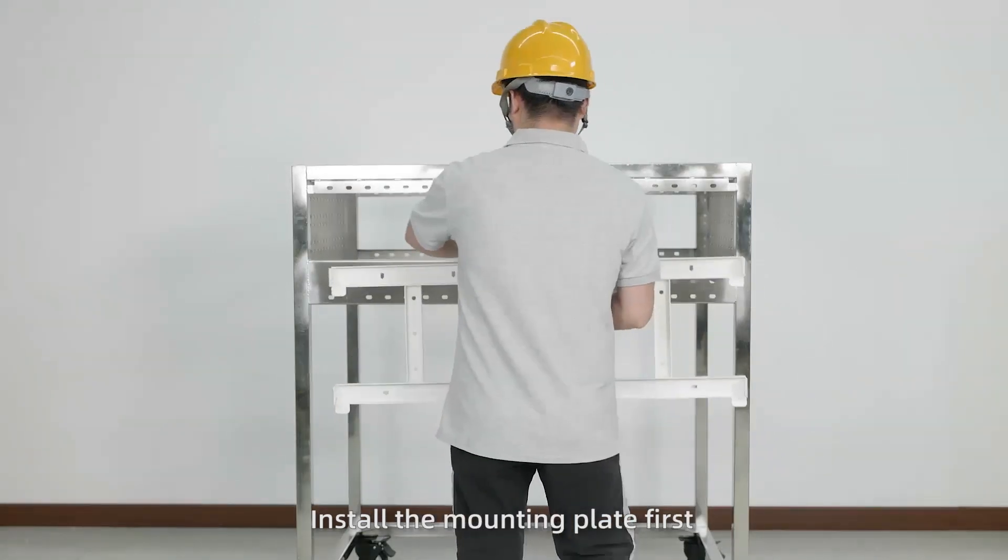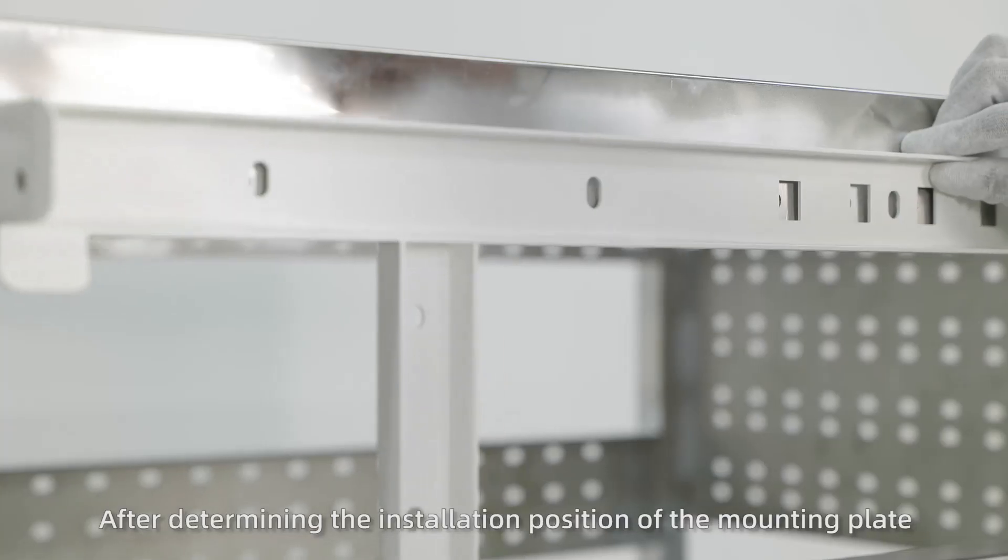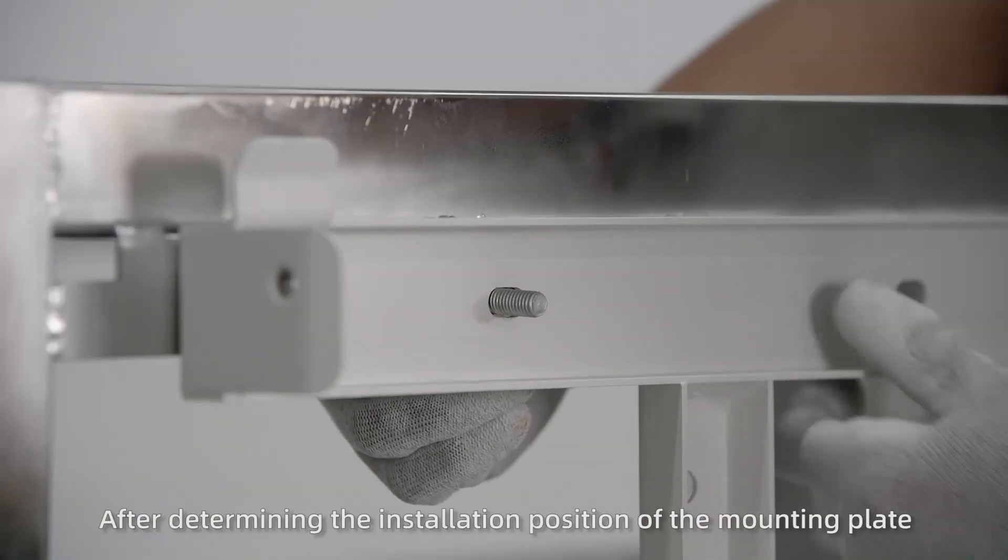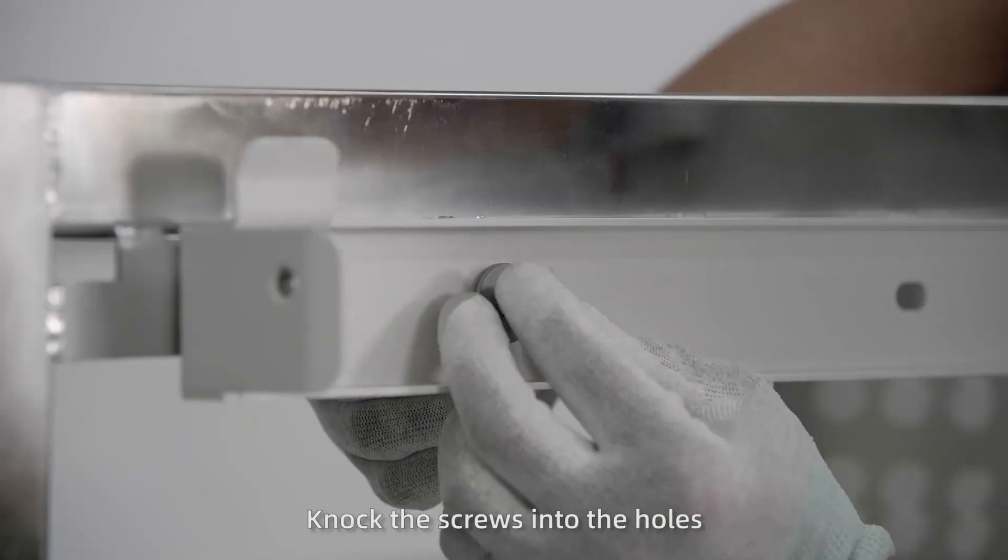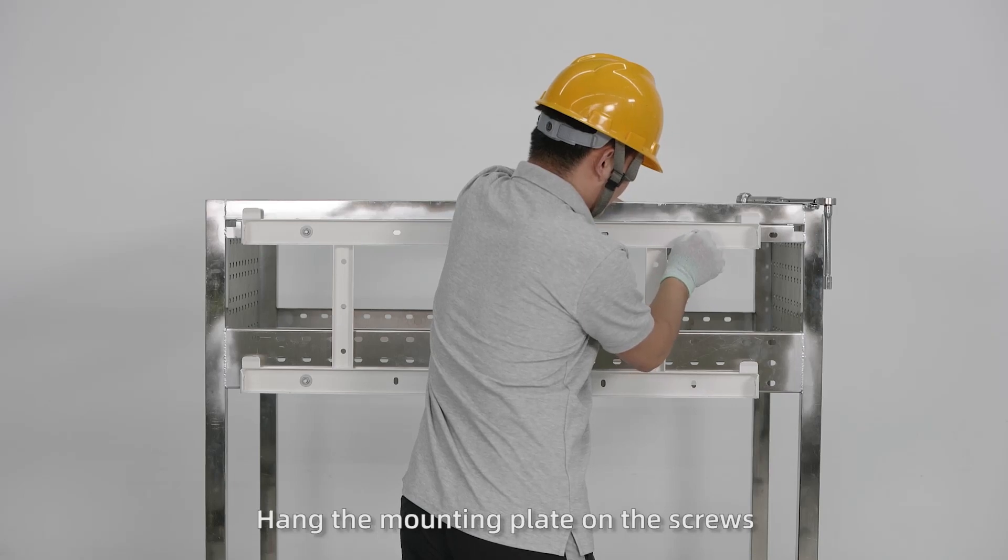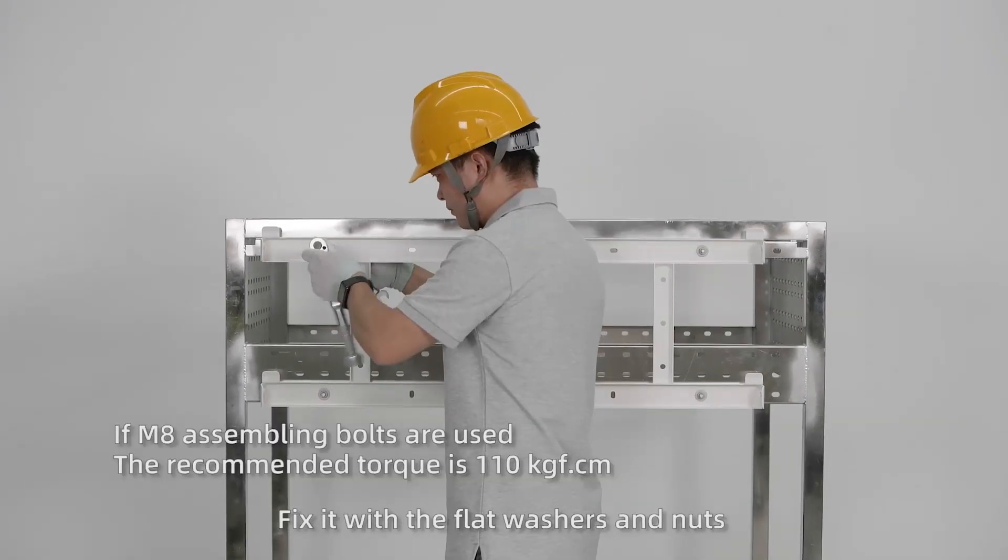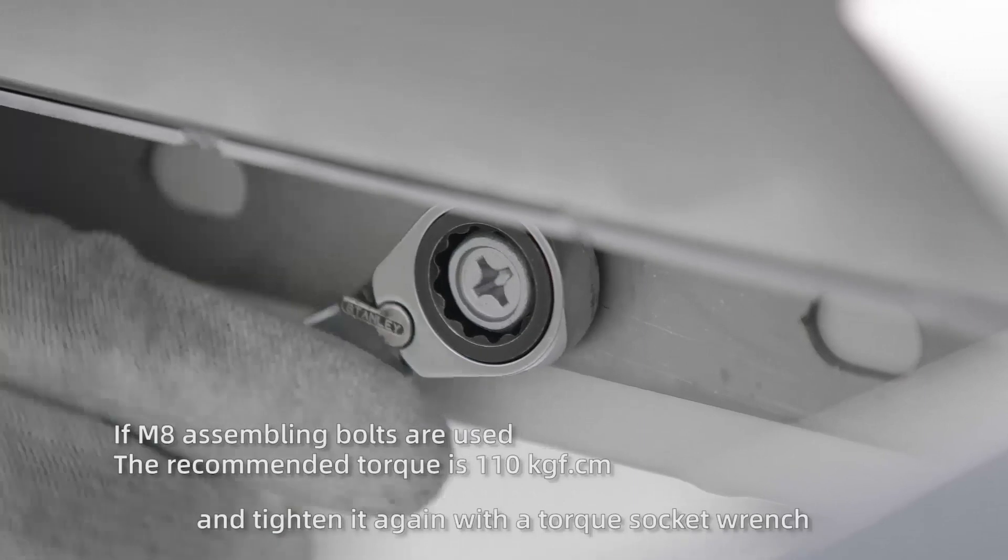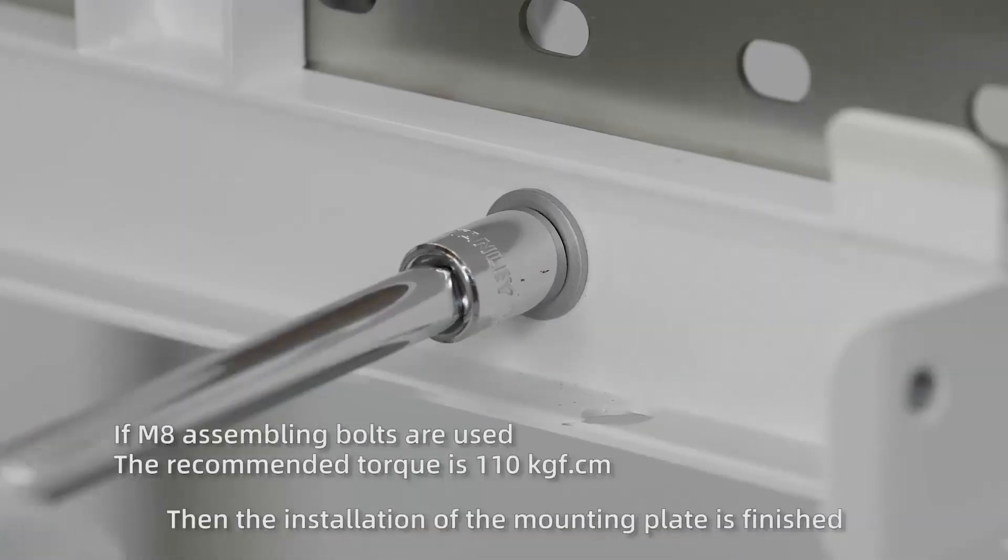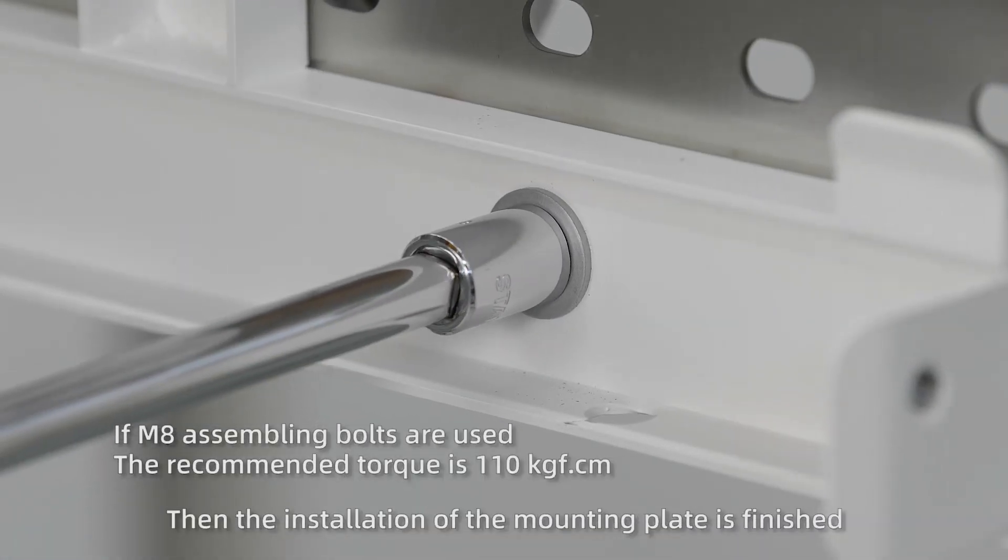Install the mounting plate first. After determining the installation position of the mounting plate, knock the screws into the holes, hang the mounting plate on the screws, fix it with the flap washers and nuts, and tighten it again with a torque socket wrench. Then the installation of the mounting plate is finished.